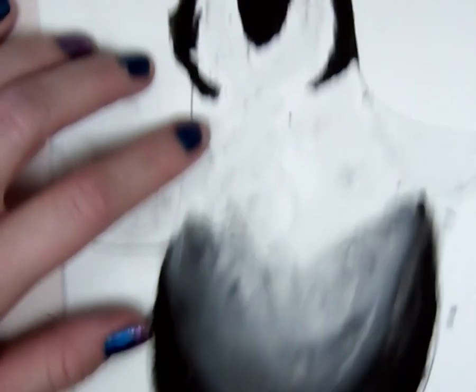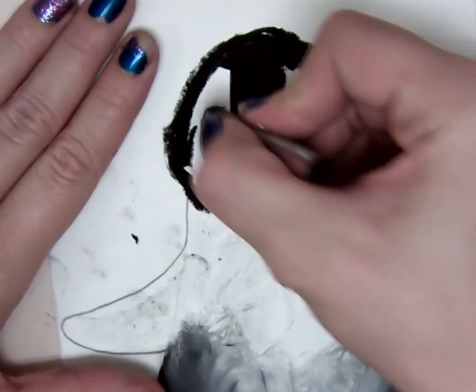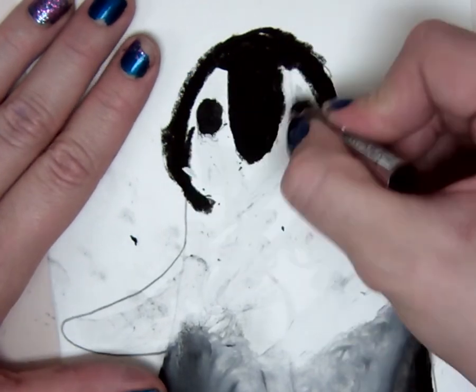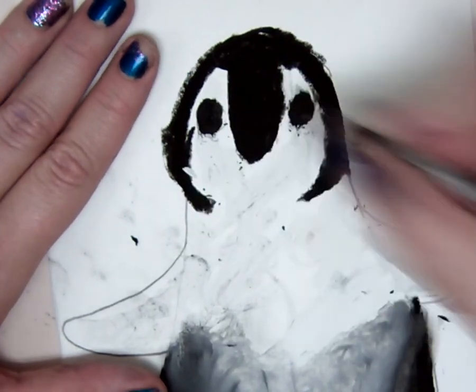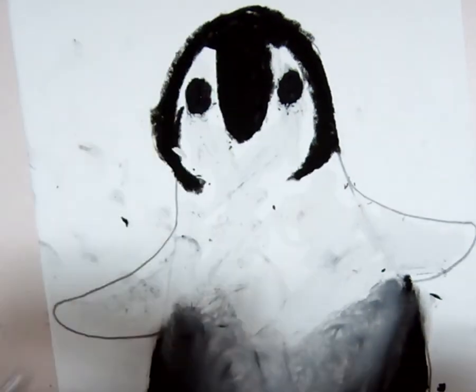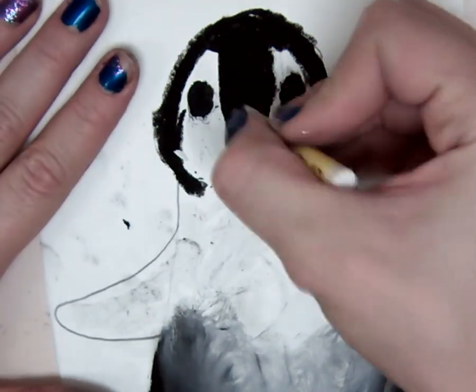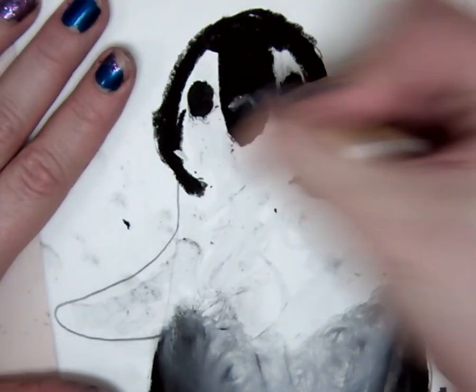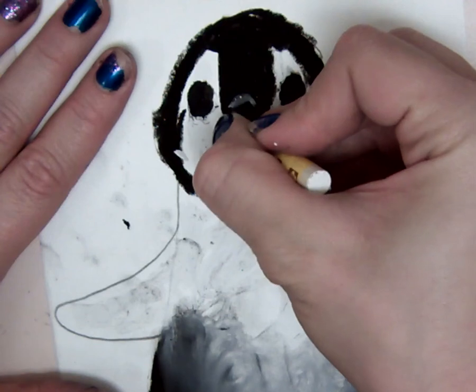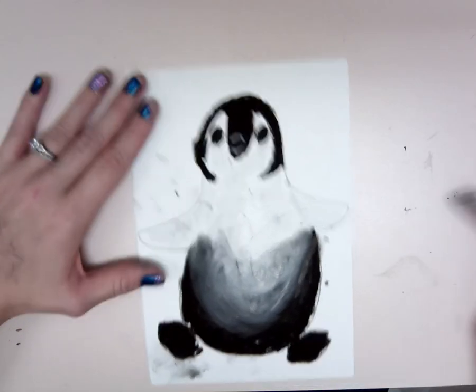So on the very top of the head where the white spot is, using your black oil pastel, you draw two nice eyes for your penguin. And then where the black oval is that we drew earlier, you're going to draw two half circles. One that looks like this and one that looks like this. So it looks like the beak of the penguin. And once that's all done, then you're going to cut out your penguin.